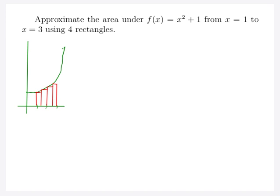We're going to approximate the area under x squared plus one from 1 to 3 using four rectangles, starting with the left sum L4. L4 is a sum of the areas of four different rectangles. We need delta x — that's b minus a over n, so three minus one over four, which gives us two over four, or one half. This is the width of each of our rectangles.